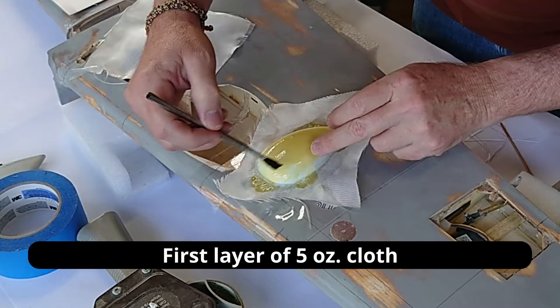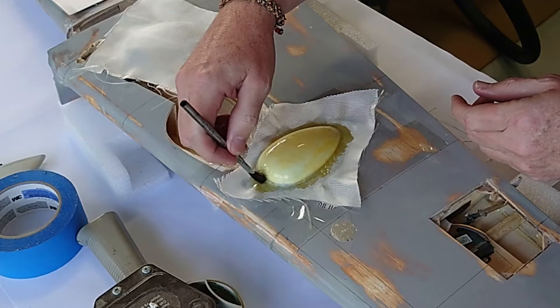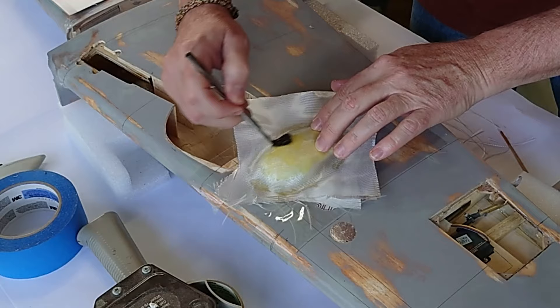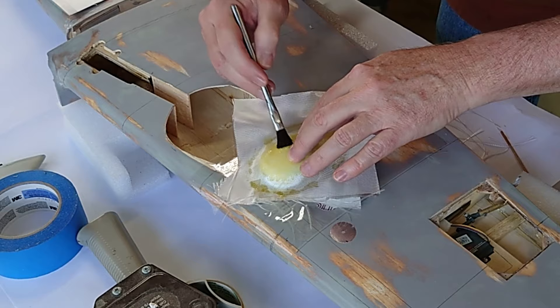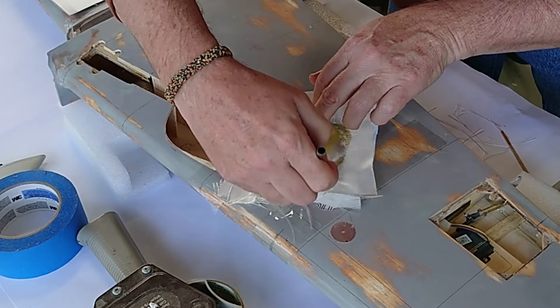See how that Vaseline helps to hold that fiberglass down. It doesn't want to move around as I blot with this brush. Initially, no new epoxy is added to the second layer. Instead, the epoxy from the first layer is pulled up into the second layer by using the brush. Only when there are white spots starting to show in the second layer is a little bit of epoxy applied to those areas and worked in.